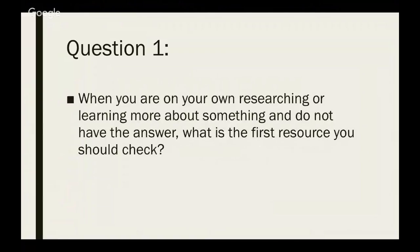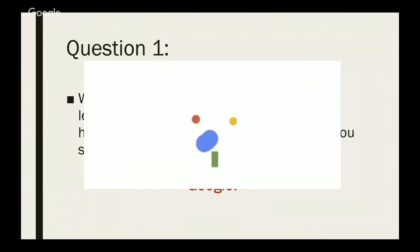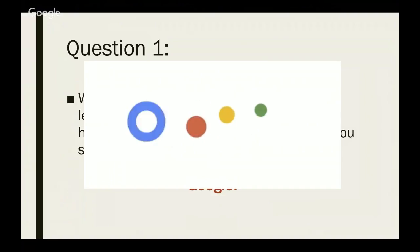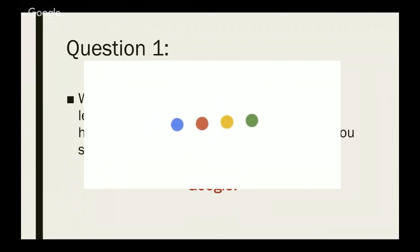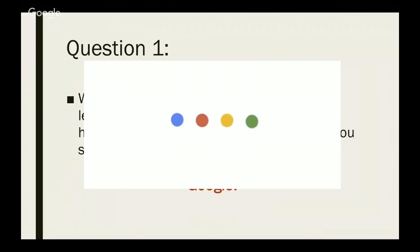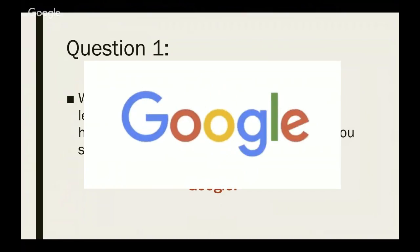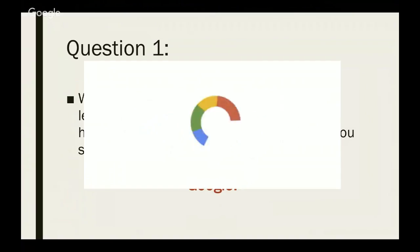Question one — drum roll please. When you are on your own researching or learning more about something and do not have the answer, what is the first resource you should check? Google. Or Bing. Or DuckDuckGo. One of our viewers picks books — Encyclopedia Britannica. Books were actually the best resource when I first started learning. But the answer is Google.